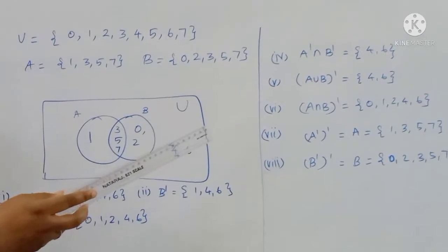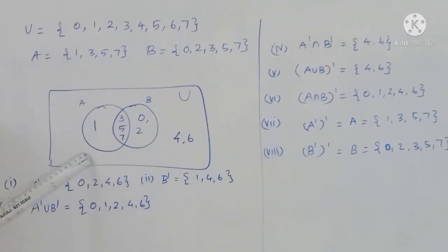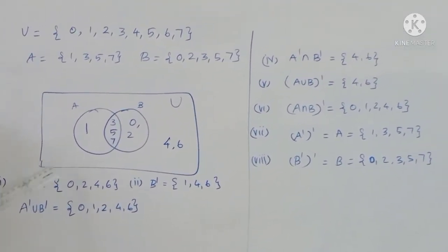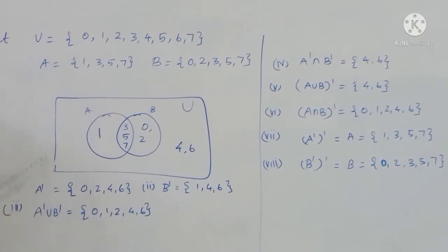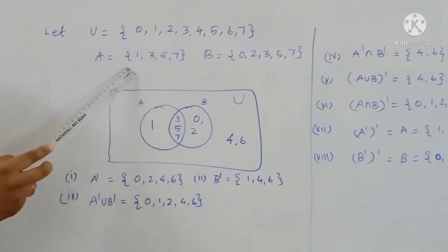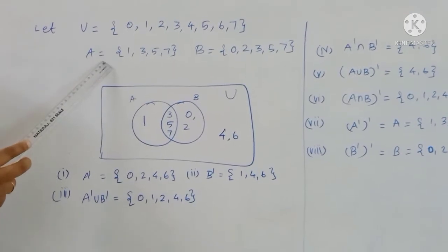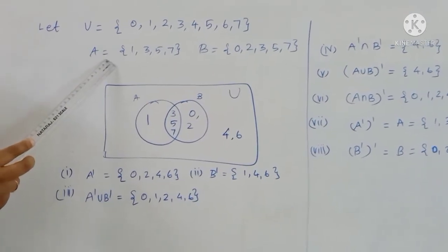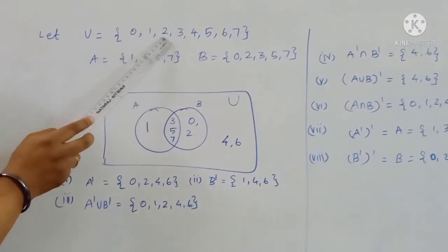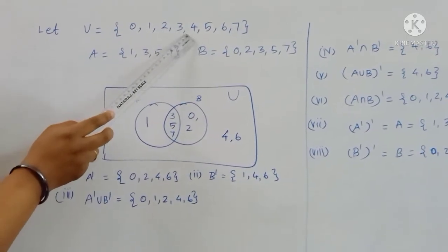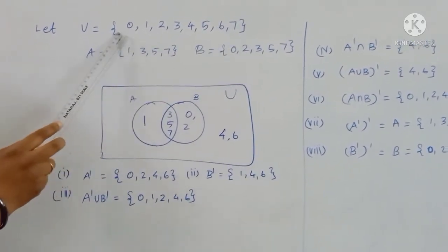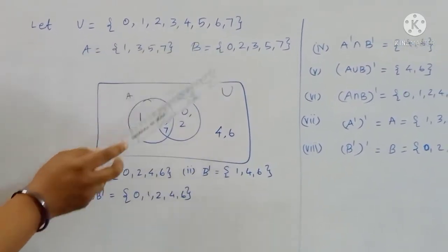We will find this using a diagram. A complement (A') means elements in U not in A. From the diagram: 0, 2, 4, 6 — those are the elements of A'.